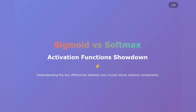What's up everyone? Today we're diving into one of the most fundamental concepts in neural networks: activation functions. Specifically, we're going head-to-head with Sigmoid versus Softmax. By the end of this video, you'll know exactly when to use each one and why it matters for your machine learning projects. Let's get started.